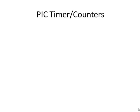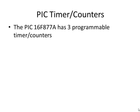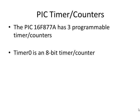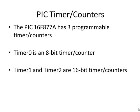Let's take a look at the PIC timer counters. This PIC chip, the 16F877A, has three programmable timer counters: timer 0, timer 1, and timer 2. Timer 0 is an 8-bit timer counter. Timers 1 and 2 are 16-bit timer counters, and their operation is identical to each other, so I'm just going to show you timer 1. Each one has several modes of operation, and you choose the mode based on the control word you write to its control register.